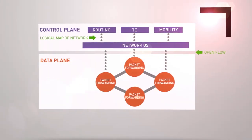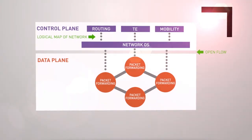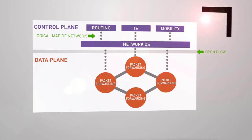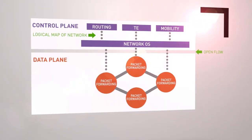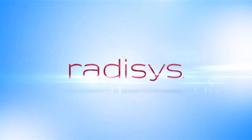This split between forwarding plane and control plane has not previously been available in the network appliance space. It's something we're used to in the carrier networks and in the mobile phone networks, but actually within the building blocks that build up your local area network, it's something which is completely new. Redisys build products to leverage this opportunity and we would like to have a dialogue with our customers. Let's work together.